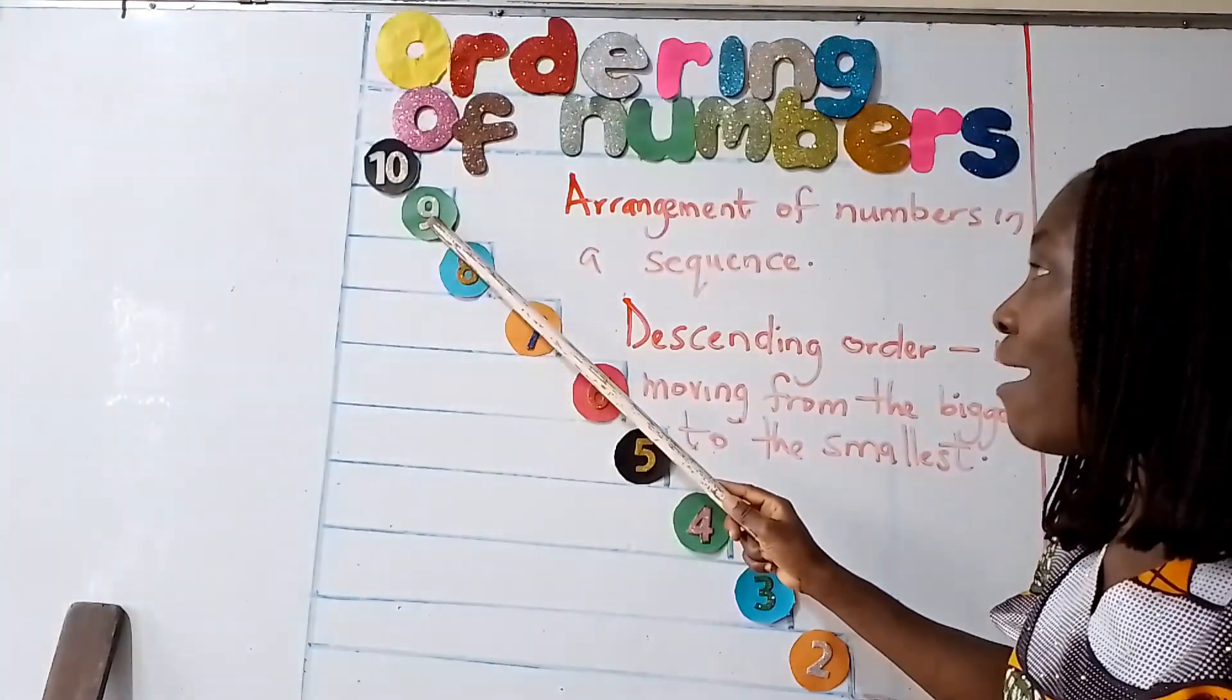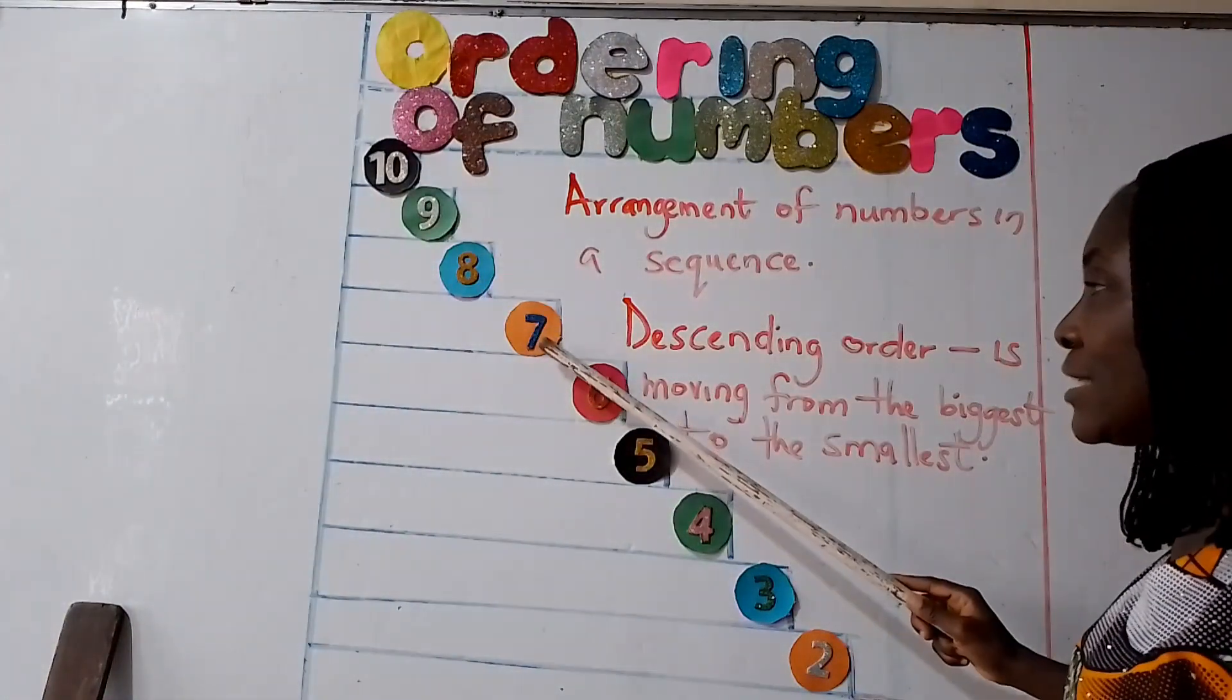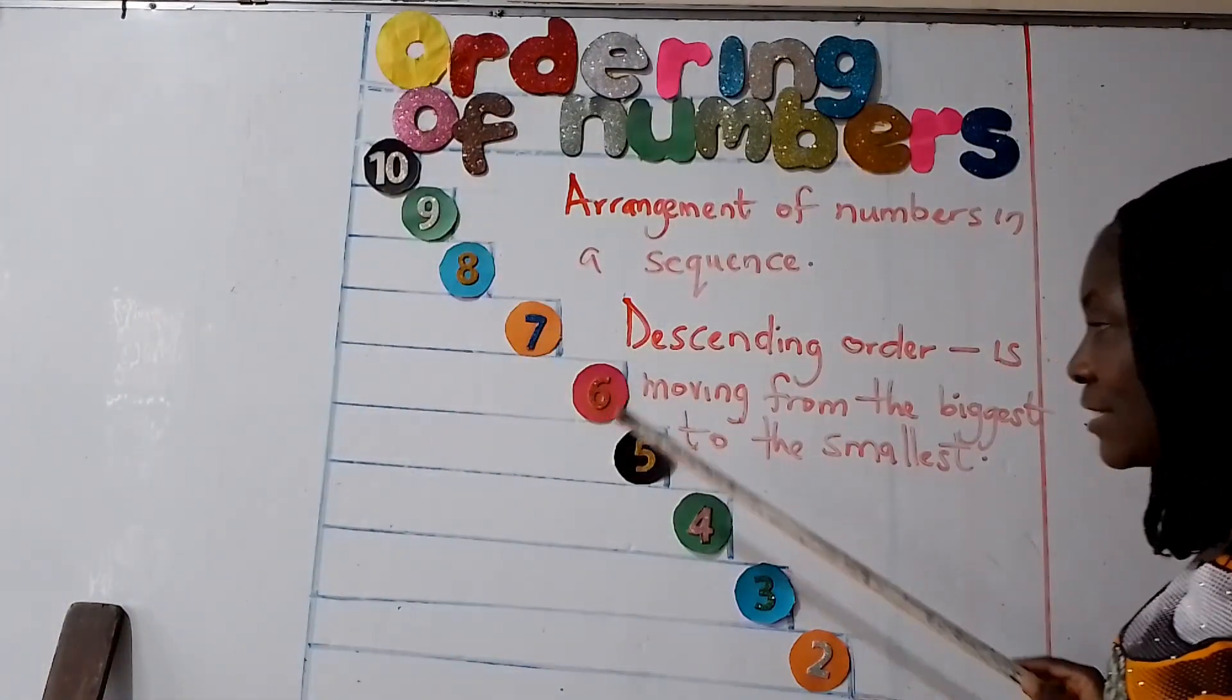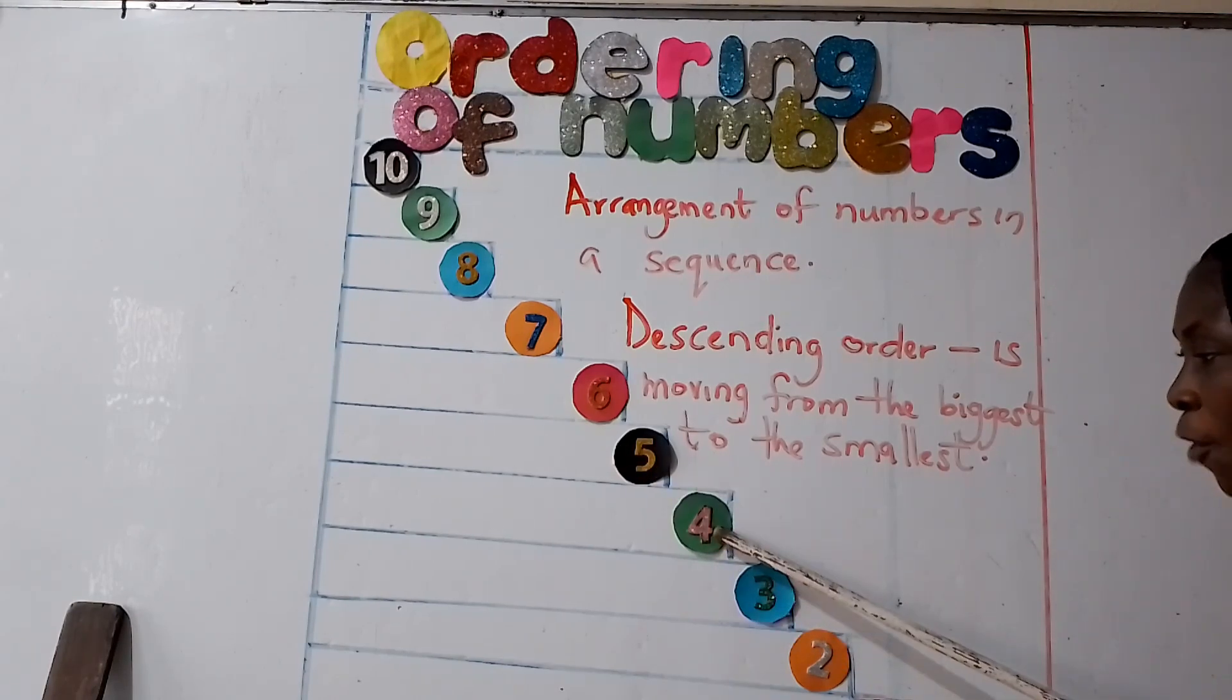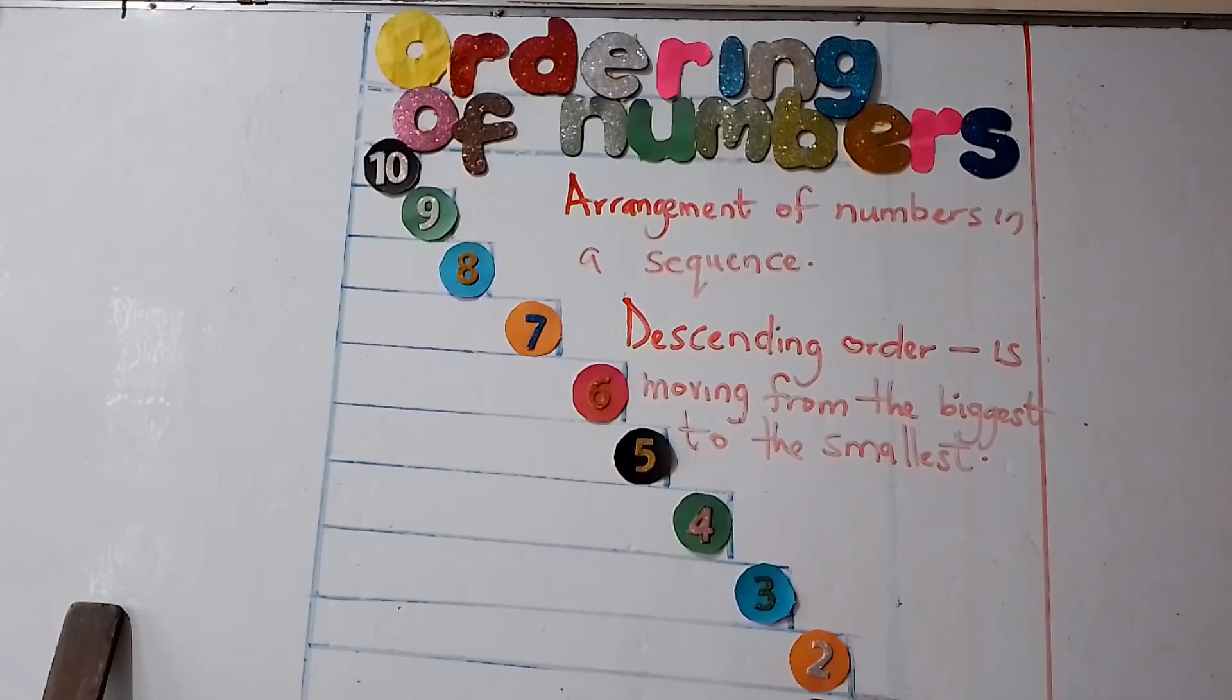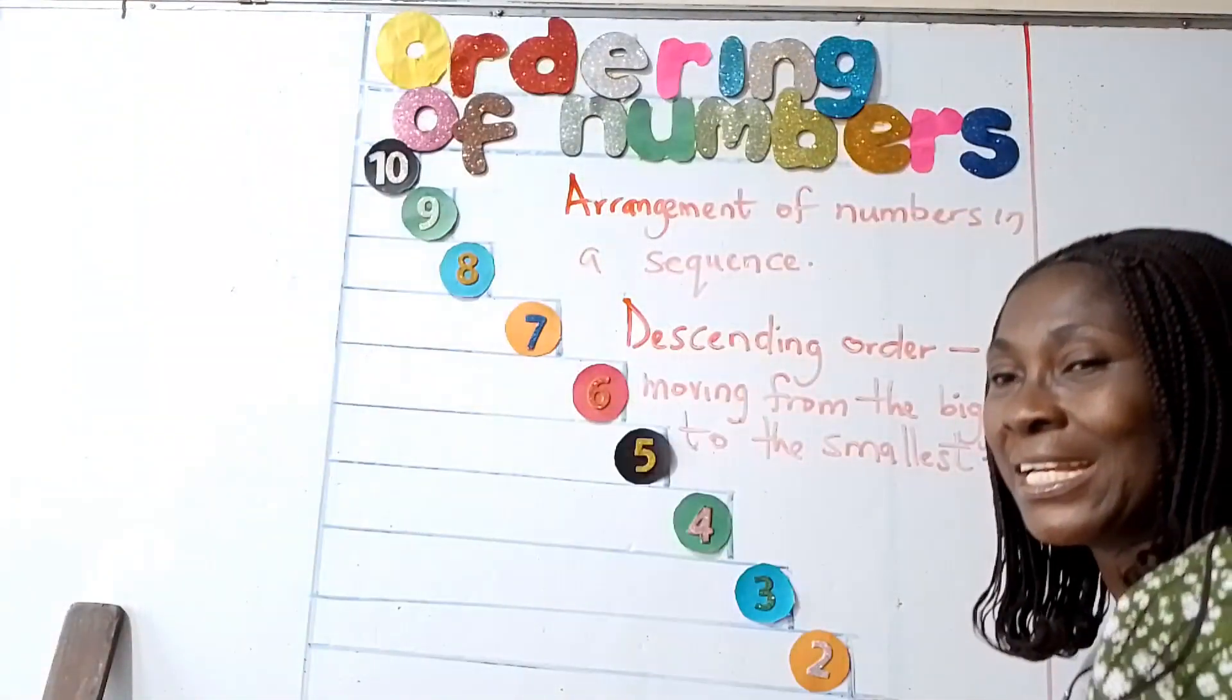10, 9, 8, 7, 6, 5, 4, 3, 2, 1. That is descending order.